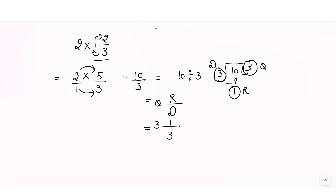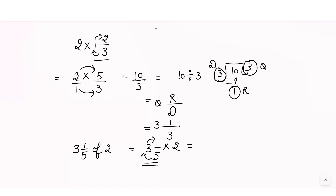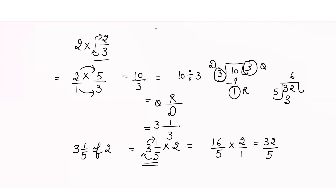Similarly, the question is 3¹⁄₅ of 2, which means 3¹⁄₅ into 2. Convert to improper fraction: 5 × 3 + 1 = 16, so we write 16/5 into 2/1, giving 32/5. Dividing 32 by 5: quotient is 6, remainder is 2, divisor is 5. So 32/5 can be written as 6²⁄₅.